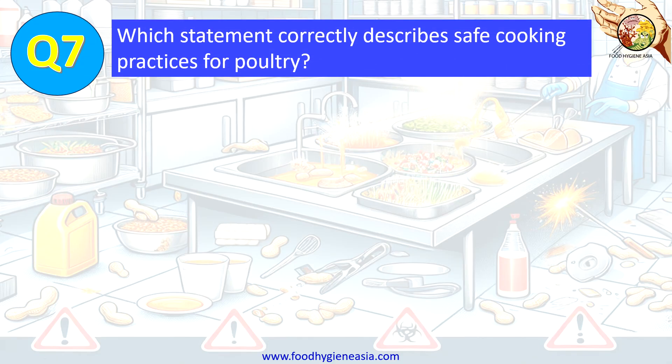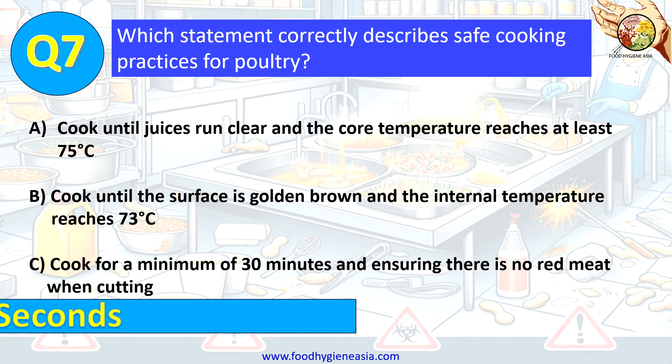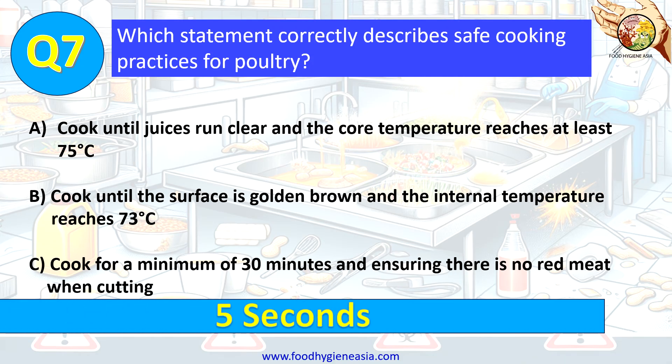Question 7. Which statement correctly describes safe cooking practices for poultry? A. Cook until juices run clear and the core temperature reaches at least 75 degrees Celsius.